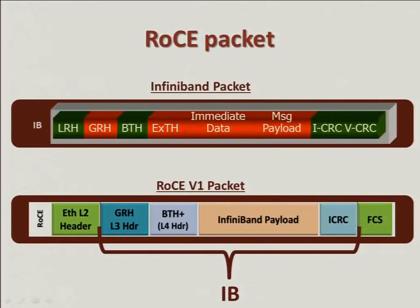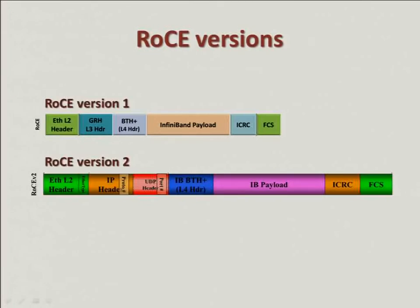RoCE packet: we saw the InfiniBand packet before. RoCE version 1 is the IB packet without the LRH, and the Ethernet header wraps the InfiniBand packet, so routing is done by the Ethernet header rather than the LRH. The version implemented into FreeBSD upstream is version 1 of RoCE. We are working on version 2, which will be pushed upstream in the near future. In version 2 there is also an IP header, which means version 2 can be routable — the current FreeBSD version is non-routable.